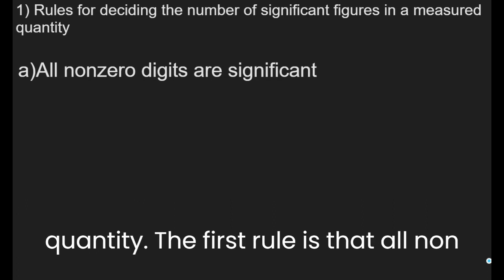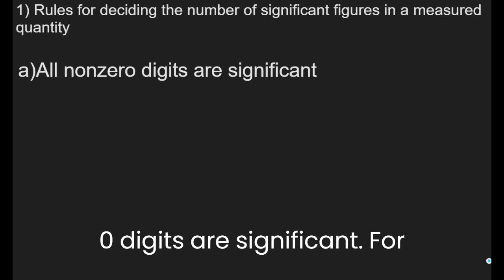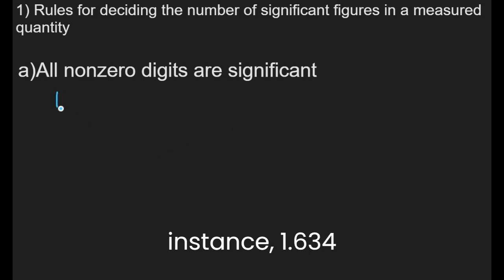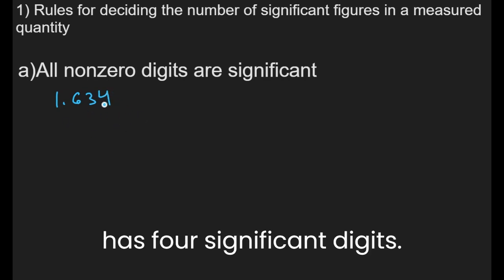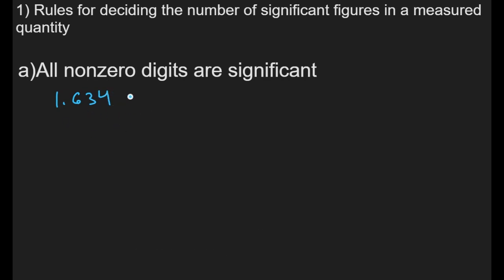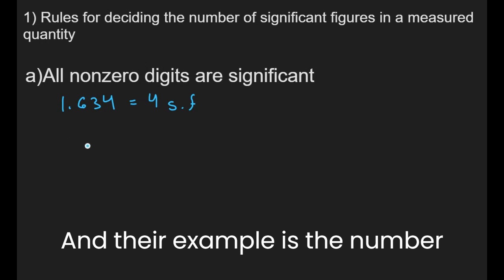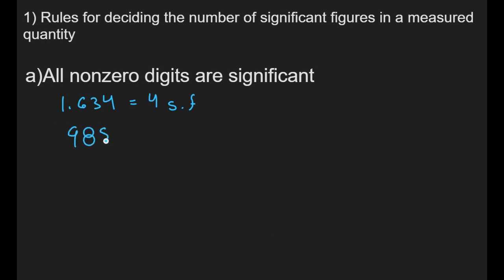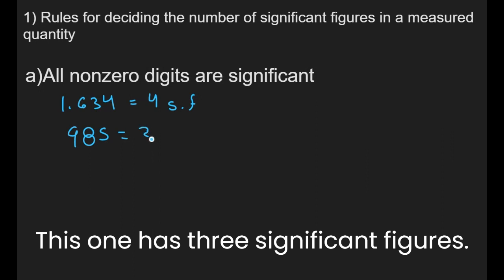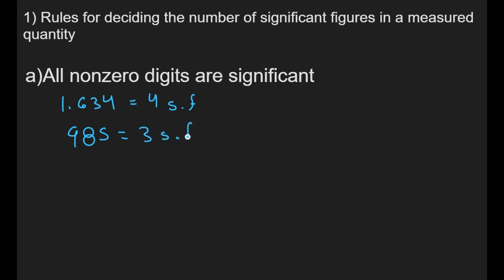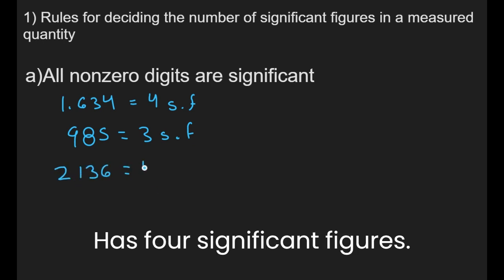The first rule is that all non-zero digits are significant. For instance, 1.634 has four significant digits. Another example is the number 985 — this one has three significant figures. And lastly, the number 2136 has four significant figures.